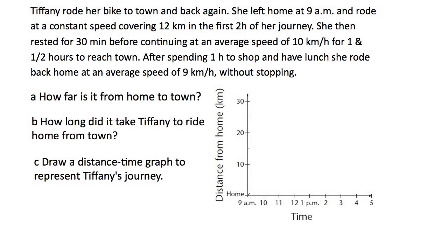Here's another example of a real-life situation put onto a graph. Read the question carefully and make sure you have an idea of what the graph looks like. This is distance from home in kilometers, and time in hours. Tiffany rode her bike to town and back again, which means she goes out and then returns home. She left at 9 a.m., so we'll put that as our starting point.